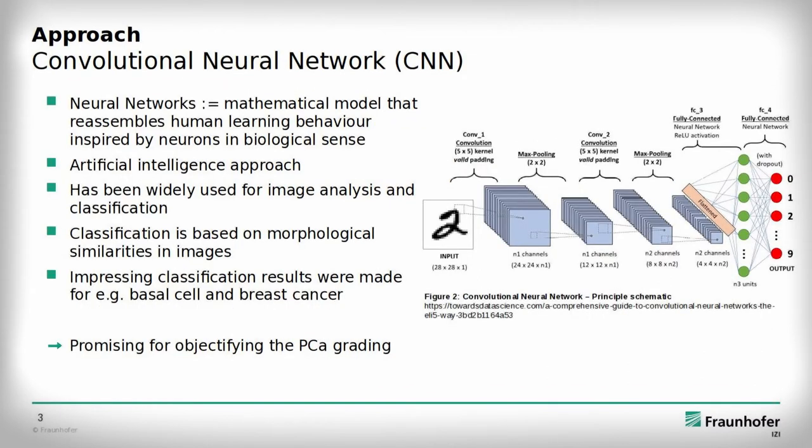To solve this question, we used a neural network architecture. Basically, a neural network is a mathematical model that resembles human learning behavior, inspired by neurons in a biological sense. A special form of it is a convolutional neural network, as depicted in Figure 2. An image serves as the input of the network, and by passing the image through this network, it will be transformed to a category, which is called a class. In past years, impressive results could be achieved for example in analyzing breast cancer or basal cell carcinoma images. Thus, we concluded that this approach seems to be promising for our problem as well.